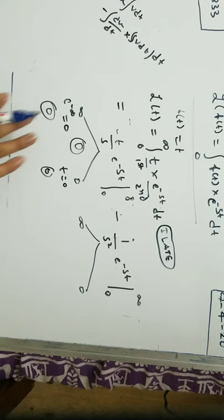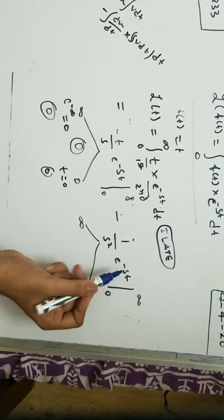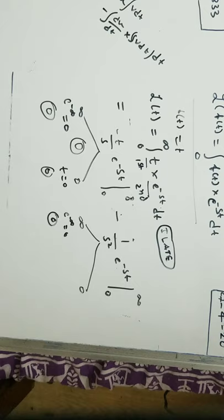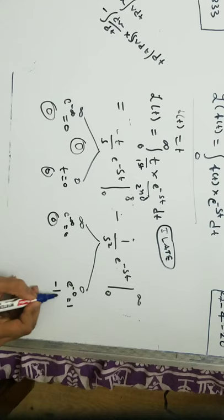That's a good thing because our equation has been simplified. Now coming to here, just like the previous case, we are going to apply e to the power minus st at infinity. So e to the power minus infinity is going to be 0, so the whole term is going to be 0 at infinity. While substituting 0, we get e to the power minus 0, that equals 1. So we get minus 1 by s squared.